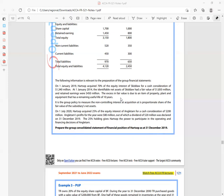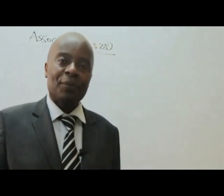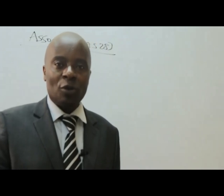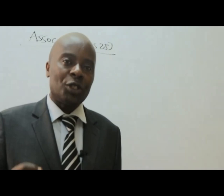On 1st July 2019, HATSOP acquired 25% of the equity interest of Angleton for a cash consideration of $200 million. Angleton's profit for the year was $80 million, out of which a dividend of $20 million was declared on 31st December 2019. The 25% holding gives HATSOP the power to participate in the operating and financing decisions of Angleton — that signifies significant influence, meaning Angleton is an associate.